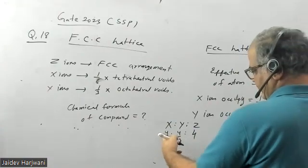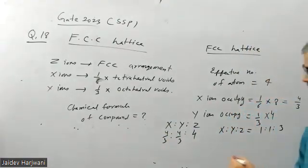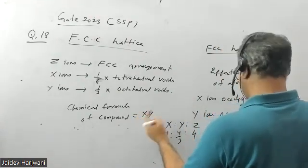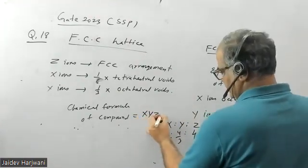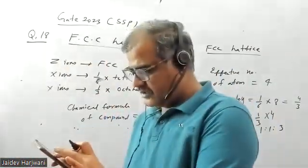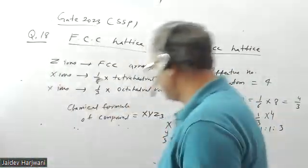If you multiply by 3, this becomes 1, 1, 3. So the chemical formula of the compound will be X, Y, Z3. And this is given as option B.